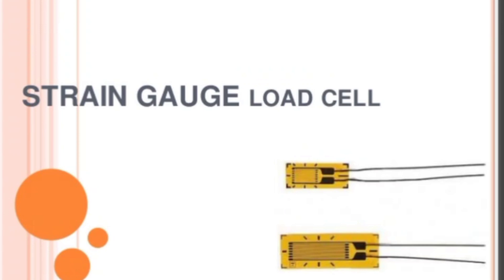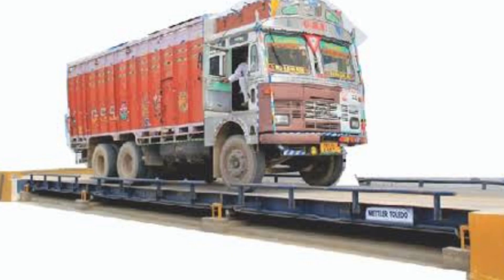The strain gauges we are using in load cells. To measure the weight of an object, strain gauges are used as load cells. In weighing balances and weighing bridges, we are using strain gauges. Load cells are made with strain gauges.